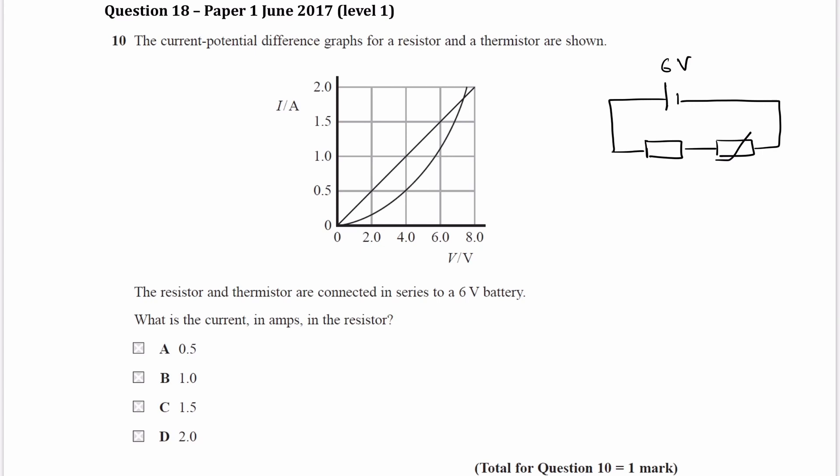So when we look at our graph, we want to think about, we pick a current value, and then for that particular current value, we see what the corresponding voltages across each of the components would be, and see if those two voltages add up to make 6 volts.